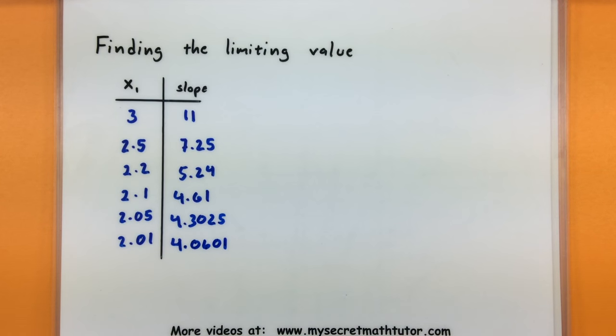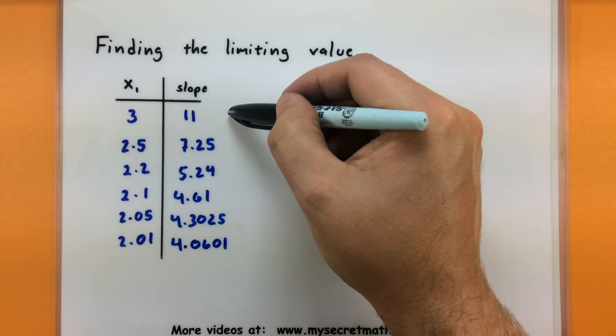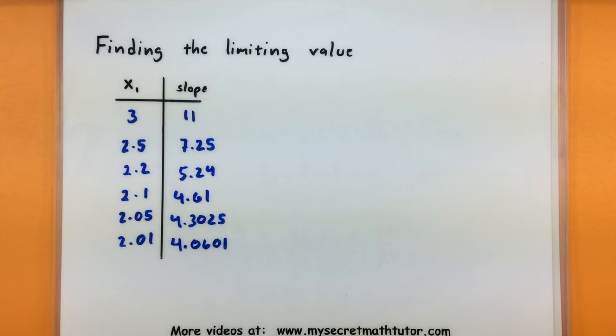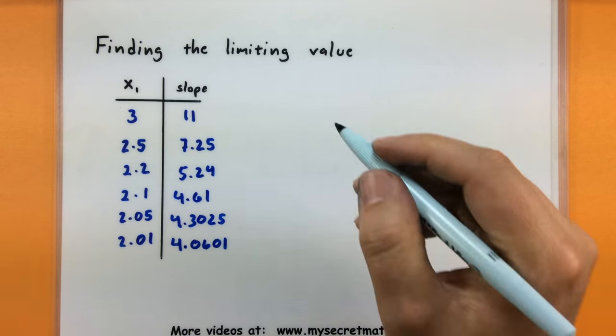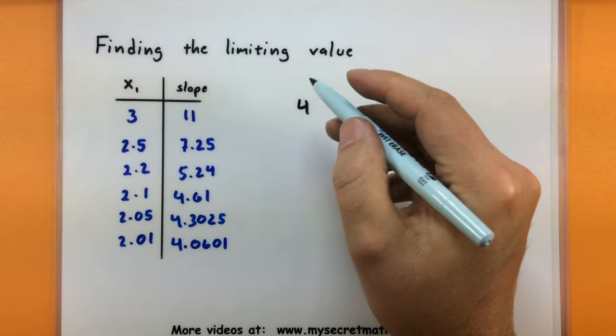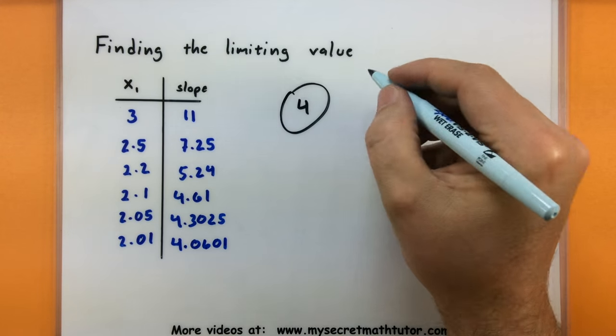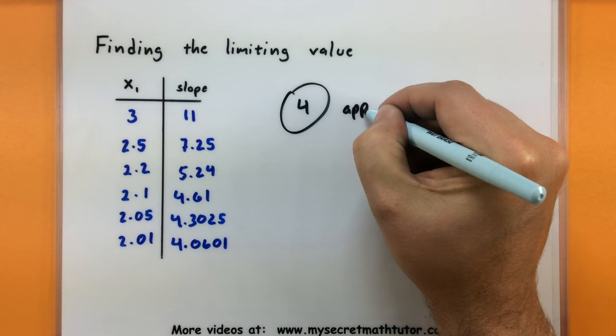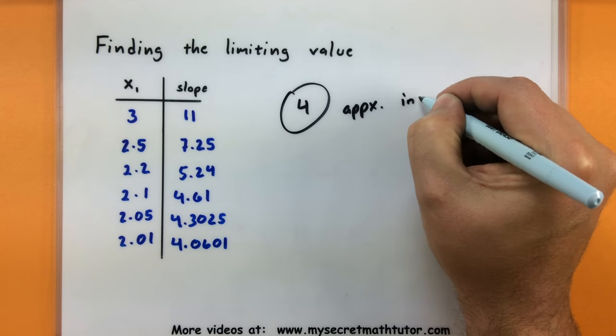Alright, so I didn't really go beyond that. Because after doing these various different slopes between those two points, it looked like things were getting closer and closer to the number 4. So that's what I would call my limiting value. It looks like things are getting really close to 4. And I will say that this is our approximation to our instantaneous change.